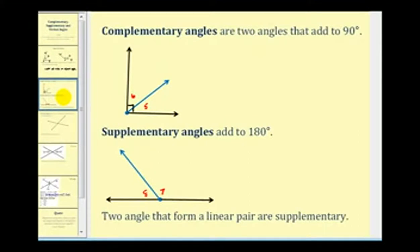Complementary angles are two angles that add to 90 degrees. Looking at the angle formed by the two black rays, the little square indicates a right angle, which means it measures 90 degrees. Angle five and angle six are two adjacent angles that form the right angle, and therefore angle five and angle six are complementary.